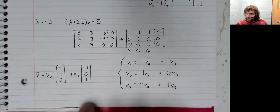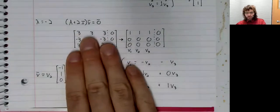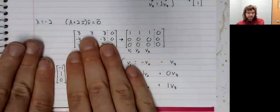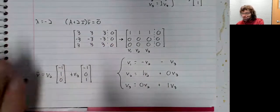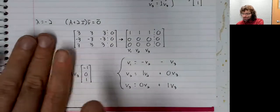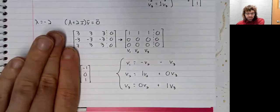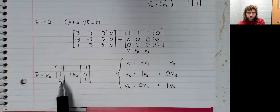So in particular, if we let V3 be zero, V2 be one, this is an eigenvector. And if we let V2 be zero, V3 be one, this is an eigenvector. And these eigenvectors are linearly independent.